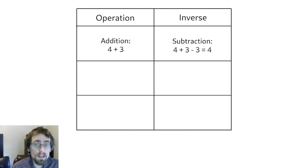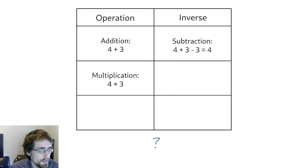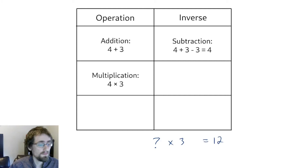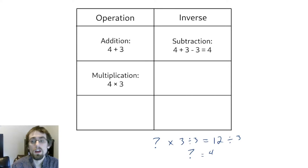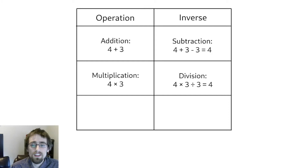Let's now look at multiplication. Let's say I had a secret number but I forgot what it is. I just remember that when I multiplied it by three, I get 12. All we have to do is undo the times three by dividing by three, and we get that the secret number must have been four — only four would give a result of 12 when multiplied by three. Because division undoes multiplication, we say that division is the inverse of multiplication.